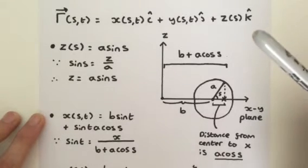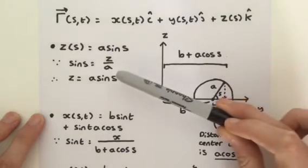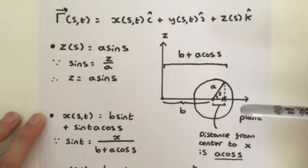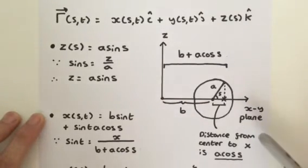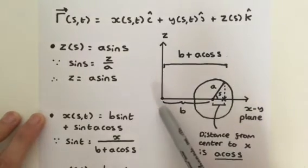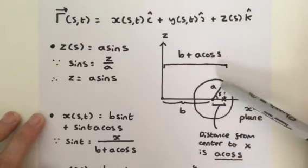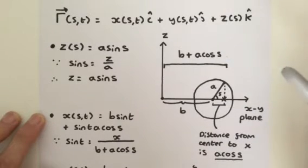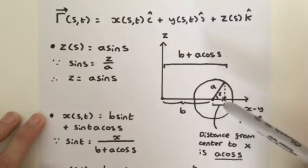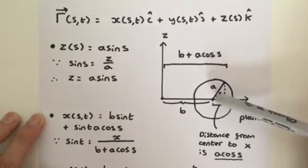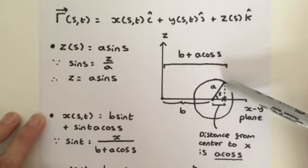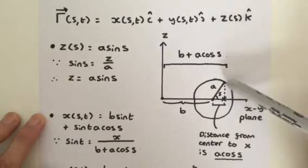So first of all we're going to define our Z component because that's the easiest. Let's look at this diagram. We have our Z axis and we have the XY plane and here is our cross section circle. This is our fixed radius B and that's our fixed radius A. As you can see Z is this distance here. As you may be able to see by just looking at the diagram, as S varies, A of course is also going to vary and the height like we mentioned just before will also vary.